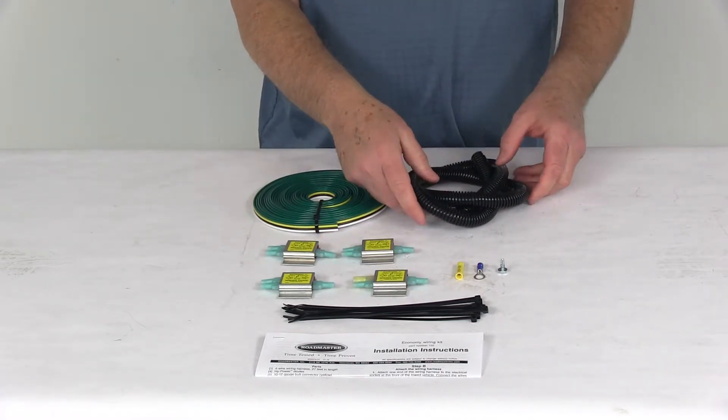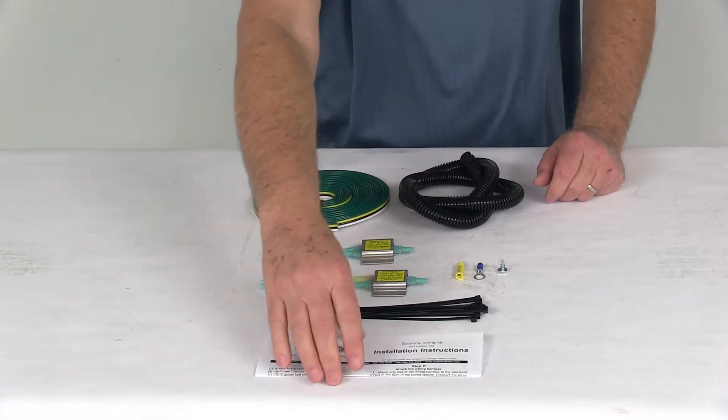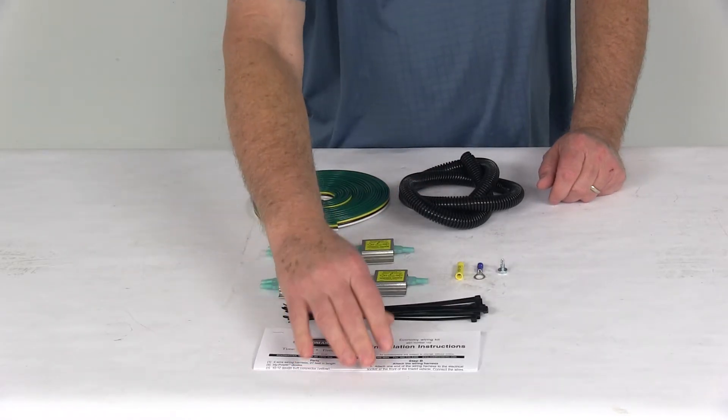a three foot long plastic loom to go over the wiring, and a set of detailed instructions that will describe how to install this on your vehicle.